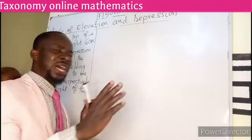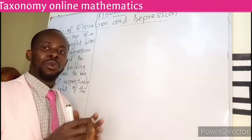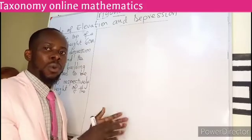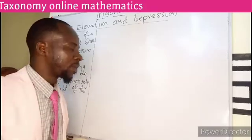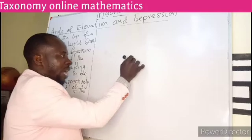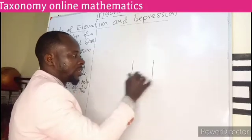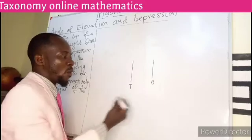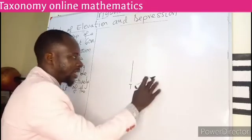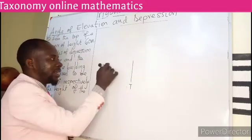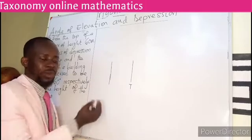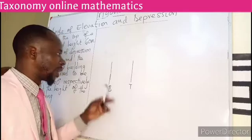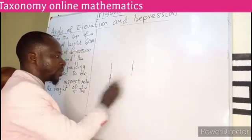We are aware that a building will be vertical, and a tower will also be vertical. If I have a tower, I can have a building — this is my building and this is my tower. Whichever way I put it, we are only saying that we have a tower and we have a building.